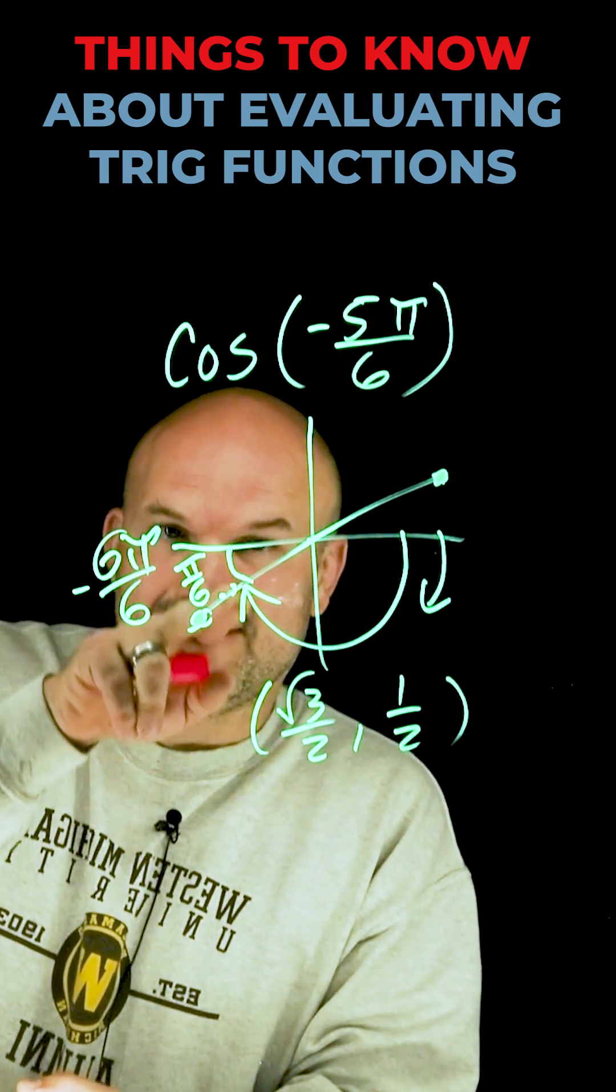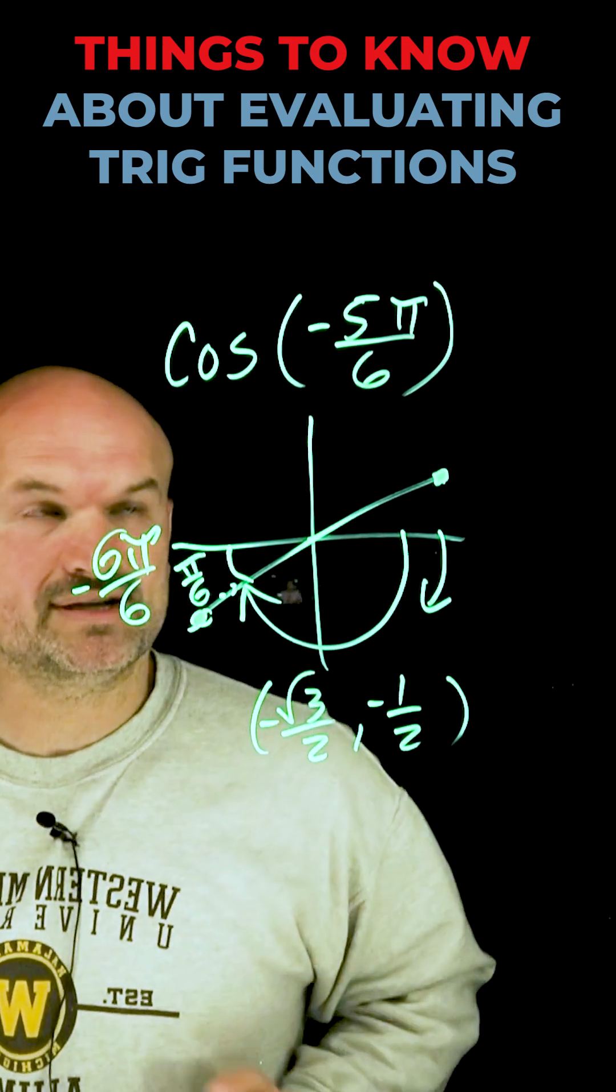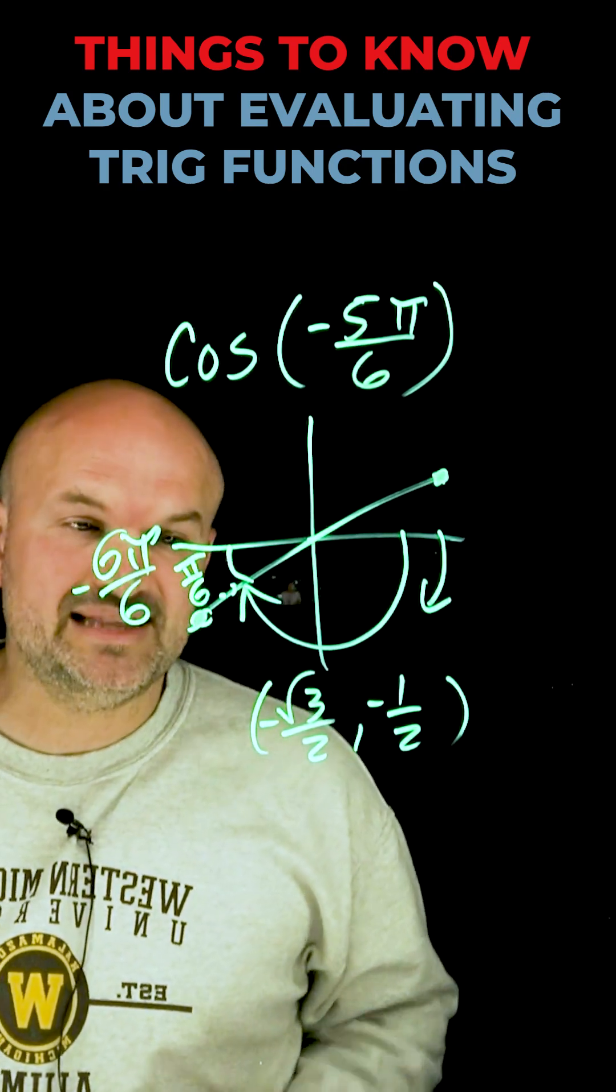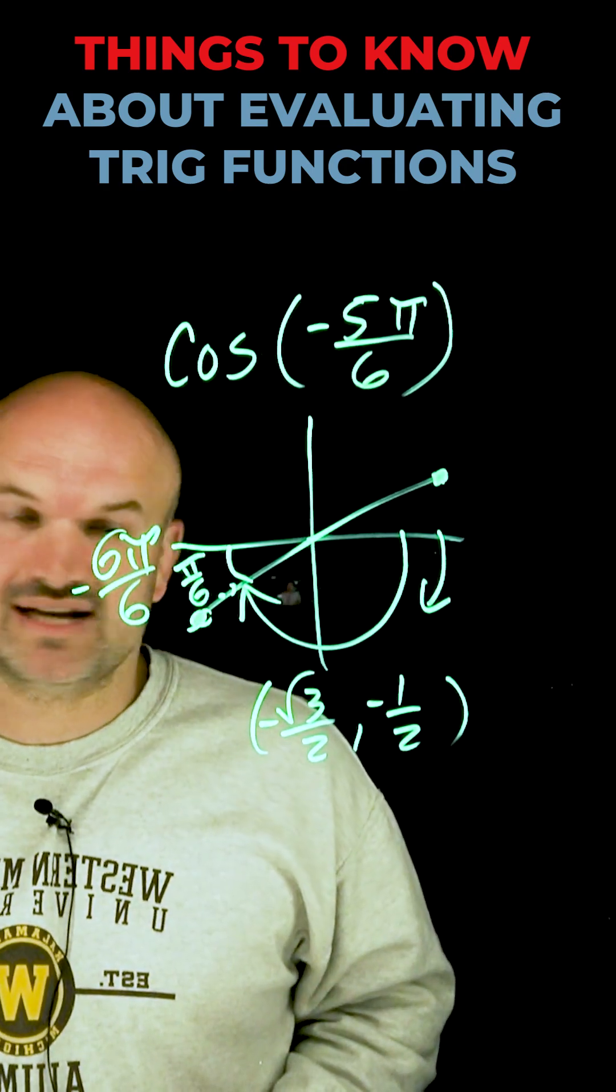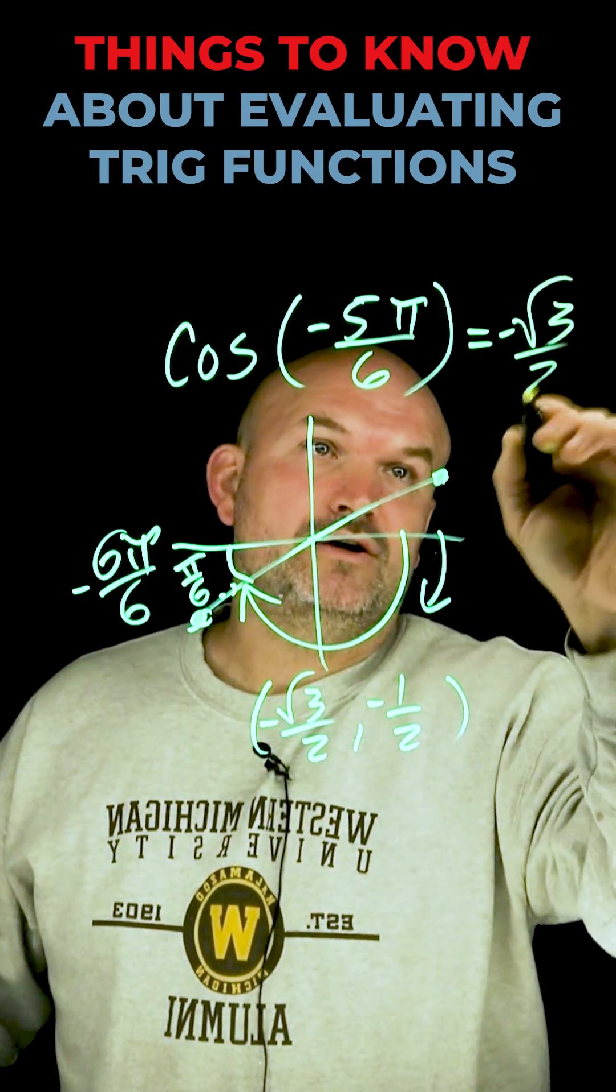Now, since I recognize this negative angle is taking me to the third quadrant, I know that my x as well as my y coordinate both have to be negative. Since I'm evaluating for the cosine, I know that's going to be the x-coordinate of the point that intersects on the unit circle, which is simply just going to be negative square root of 3 over 2.